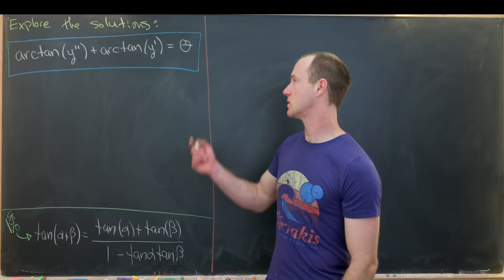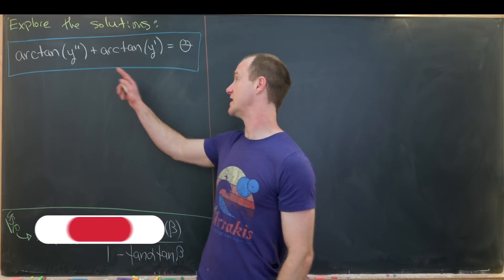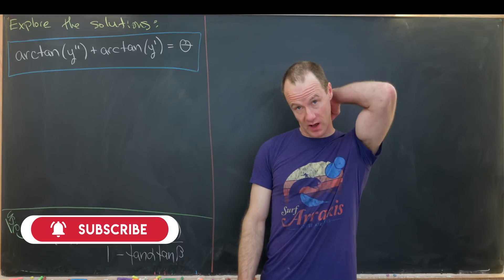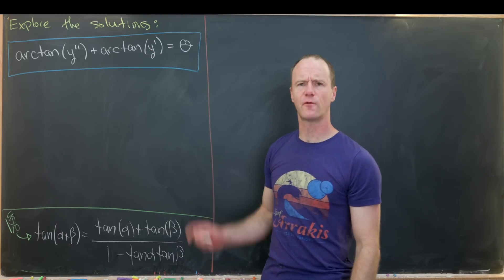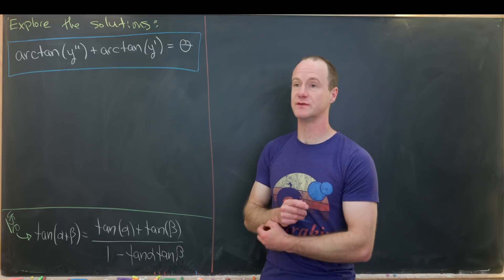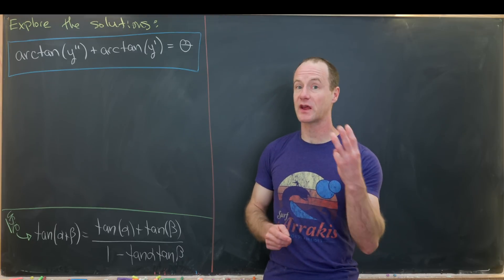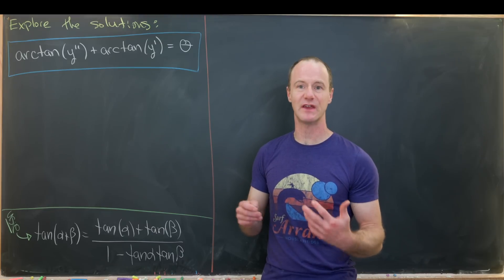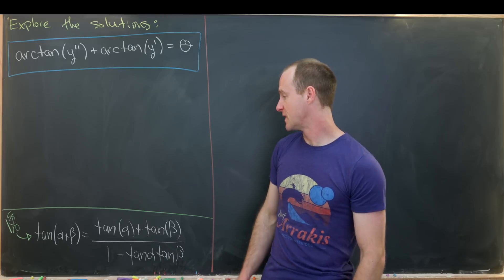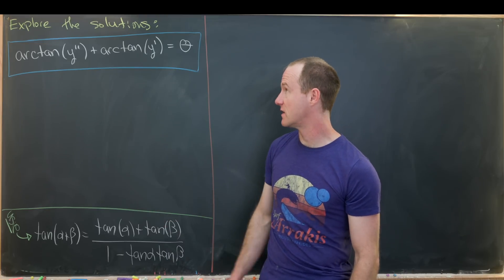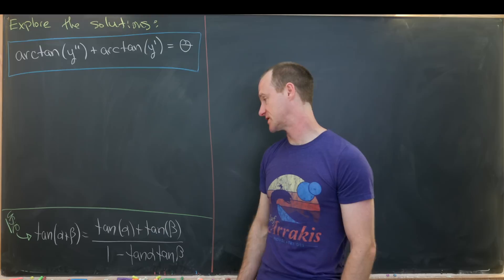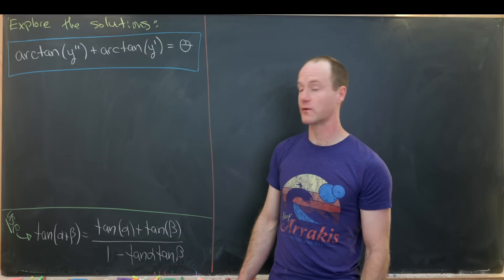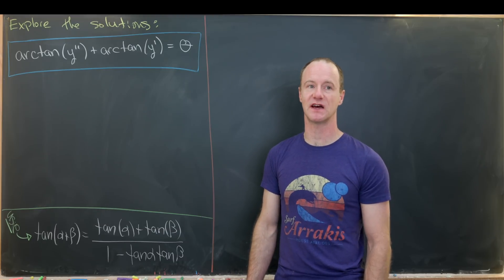We want to look at the family of differential equations: arctan(y'') + arctan(y') = θ, for a variety of values of θ. We'll pick three values in particular, and I think these three values will give us a good idea of what happens in general. We're going to use the following sum angle formula for tangent: tan(α + β) = (tan α + tan β) / (1 − tan α · tan β).